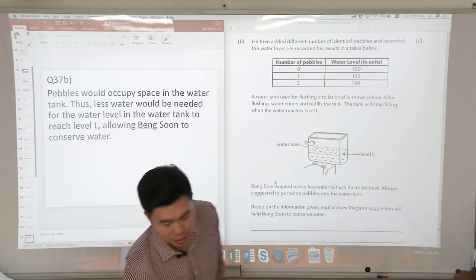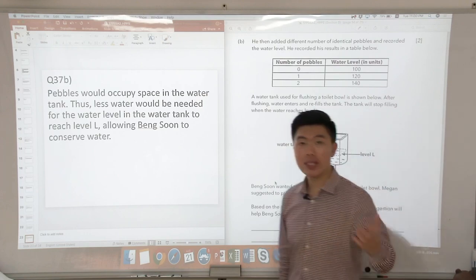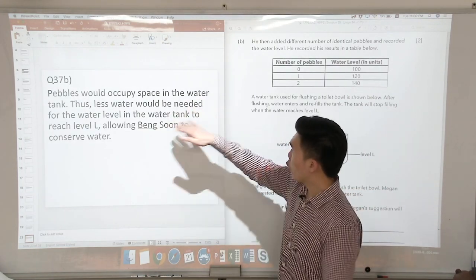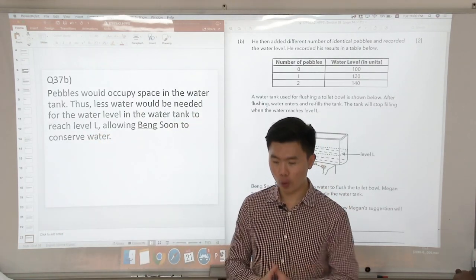So this is how we will phrase our answers. The pebbles would occupy the space in the water tank, so less water would be needed to fill the water level in the water tank to reach level L, and that's how Bing Sun is going to conserve water.